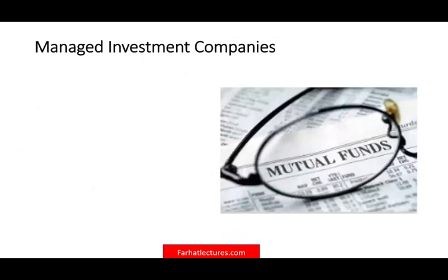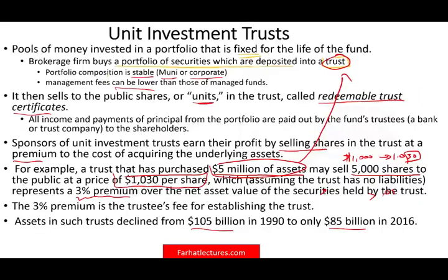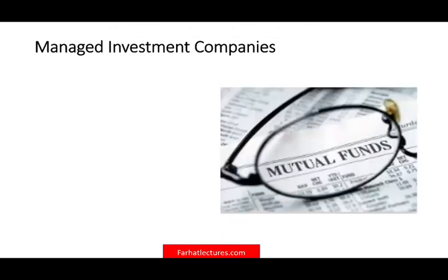Another type of investment companies are managed investment companies. Unlike unit investment trusts — which are unmanaged — these will be actively managed. Under managed investment companies, we have two types: open-end and closed-end.